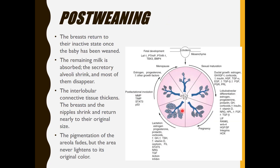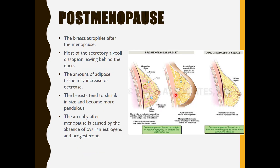Post-weaning, the breast returns to its inactive state once the baby has been weaned. The remaining milk is absorbed, the secretory alveoli shrink and most disappear, and the interlobular connective tissue thickens. The breast and nipples shrink and return nearly to their original size. The pigmentation of the areola fades but never lightens to its original color.